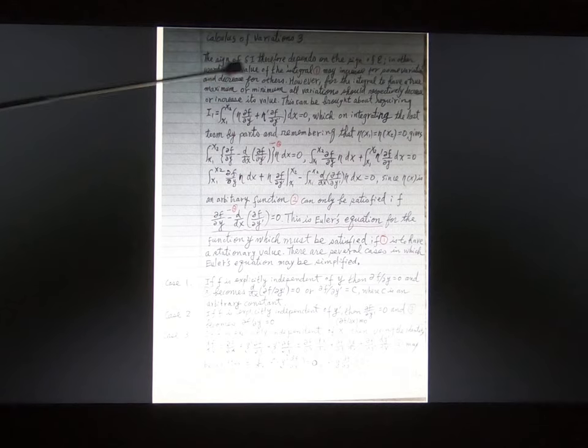And now your Euler equation is this one. This is the Euler equation equal to zero. This means it's stationary or is maximum or minimum.